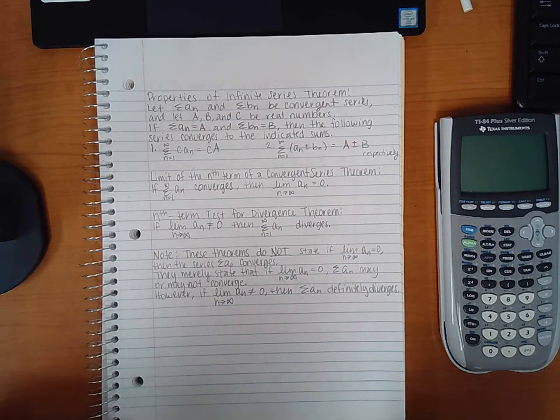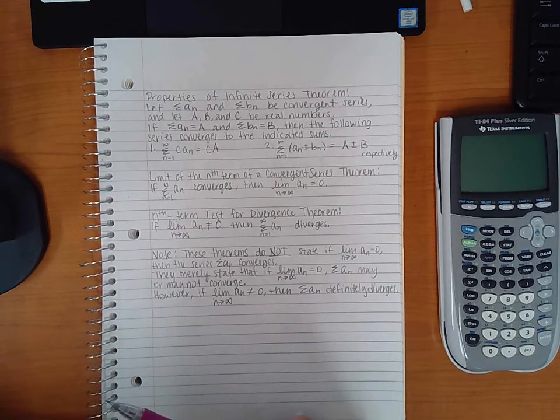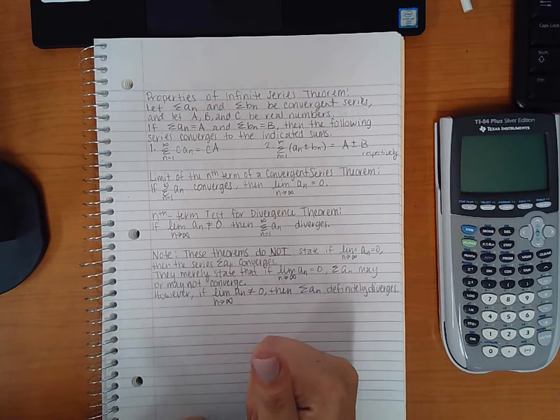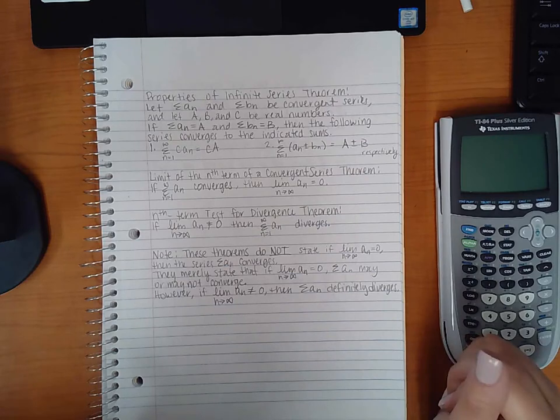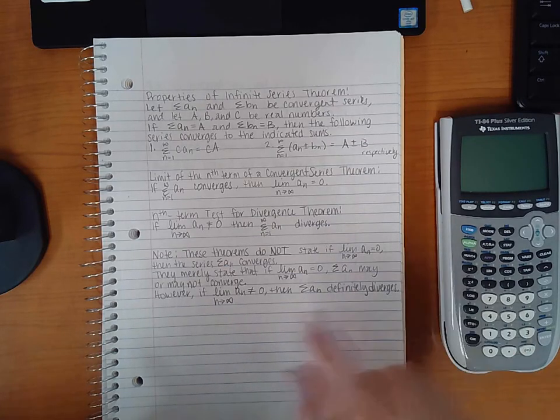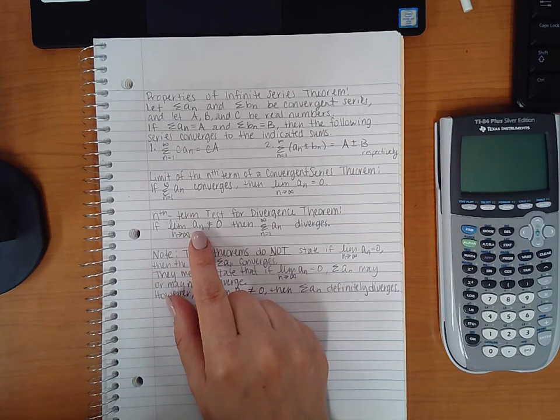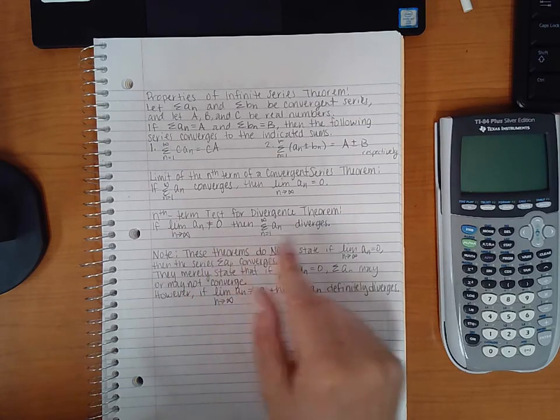Of course, every section that we have after this section in chapter nine is going to be about all those different methods. But one thing you can do right off the bat for every single problem you see from here on out is take the limit of the nth term, and if it does not equal zero, then you automatically know that the series diverges.